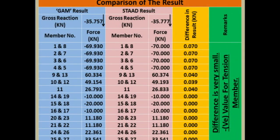This is our chart for comparison of the results between the Graphico-Analytical Method and STAAD. The left-hand side columns show the GAM results and the right-hand side columns show the STAAD results. The gross reaction: as per GAM it is minus 35.757 kN and for STAAD it is 35.777 kN — a difference of 0.02 kN. The negative sign indicates a downward reaction. For member forces in members 1 and 8, 2 and 7, 3 and 6, 4 and 5, as per GAM it is 69.930 kN.